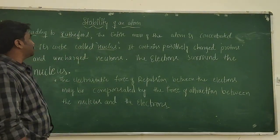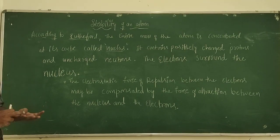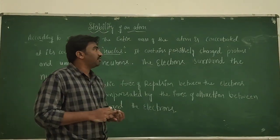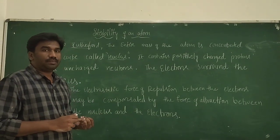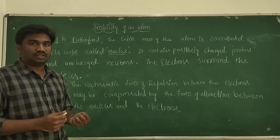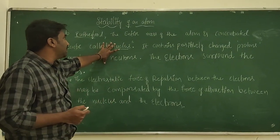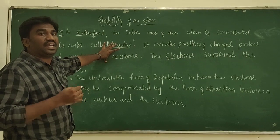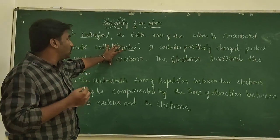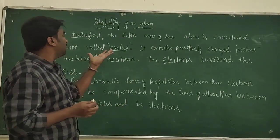In the last video we discussed some failures of classical mechanics, like the stability of an atom, magnetic radiation, and atomic spectra. In this video we discuss how classical mechanics fails and what the main reasons are for its failure to explain the stability of an atom.